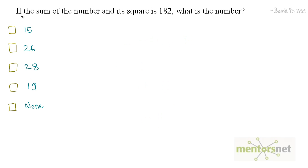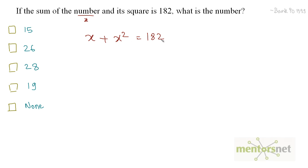Moving on to the next question. If the sum of a number and its square is 182, what is that number? Let the number be x. The sum of the number and its square gives x plus x² = 182.